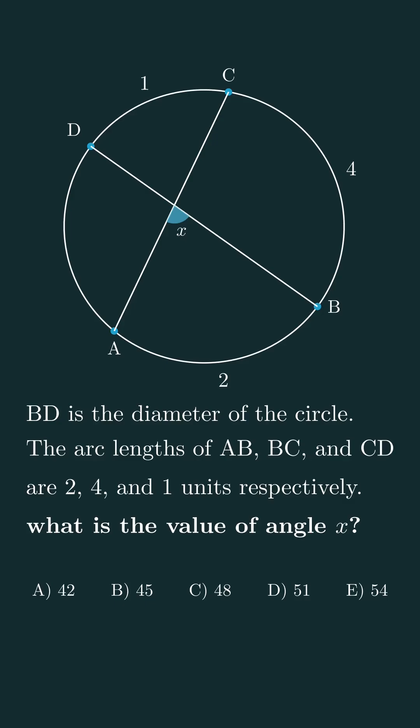Another very important piece of information is that BD is the diameter. Because if BD is a diameter, it divides the circle into two equal halves.